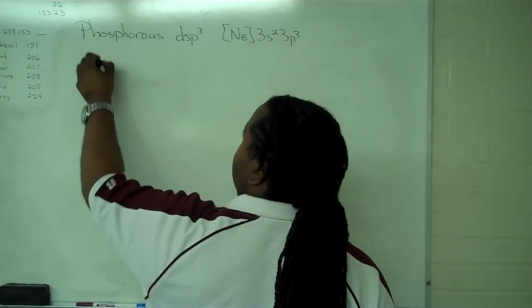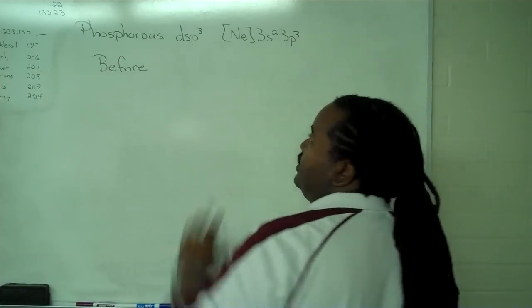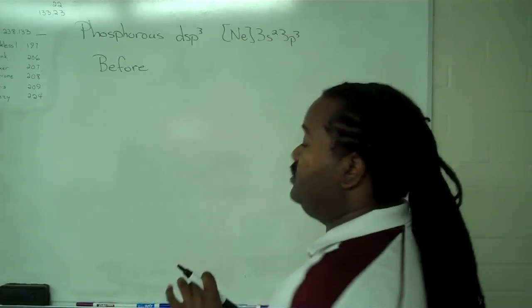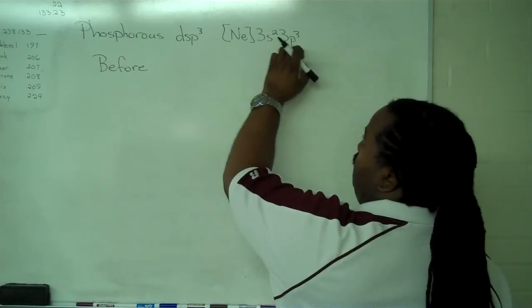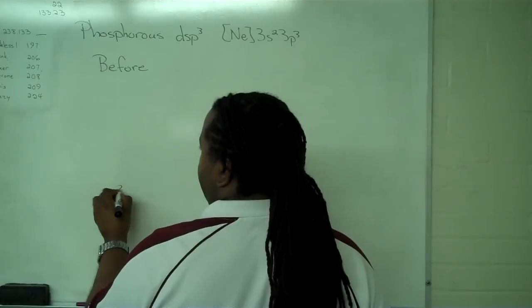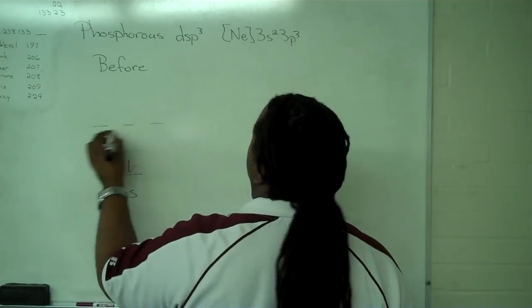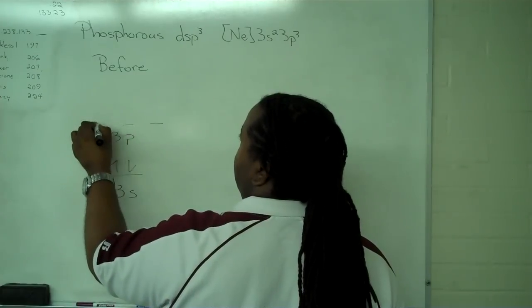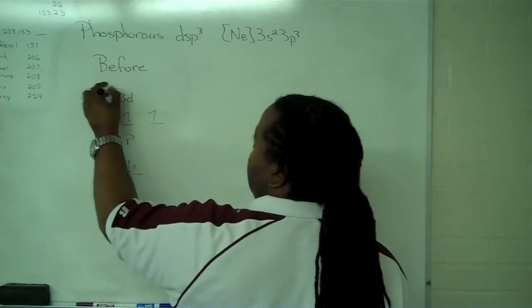So the first thing we want to do is write up what the orbitals looked like before. Because this is dsp hybridization, we need 3d orbitals to go along with our 3s and our 3p. So we have 3s², we have 3p with one, two, three electrons, and we have 3d which is completely empty.